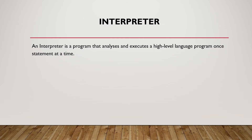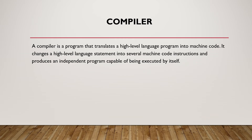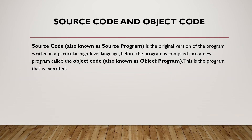An interpreter is a program that analyzes and executes a high-level language program one statement at a time. A compiler is a program that translates a high-level language program into machine code. It changes a high-level language statement into several machine code instructions and produces an independent program capable of being executed by itself.